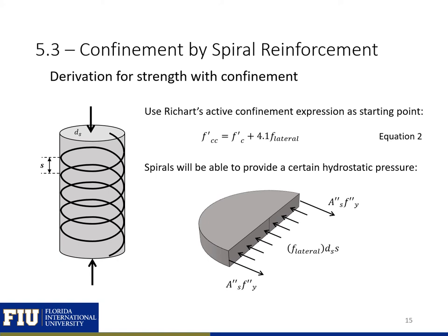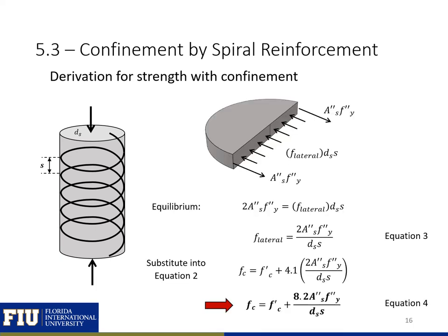We're going to look at a derivation for strength with confinement of a circular column with spiral reinforcement, using Richart's active confinement expression as a starting point. We take a slice from our circular reinforced concrete column and cut it in half. We can set our lateral force caused by the concrete wanting to expand equal to the restraining force provided by our spiral reinforcement using equilibrium, then solve for f-lateral and plug this into our expression from Richart et al. This gives us an expression relating confined concrete strength to unconfined concrete strength and the characteristics of our spiral reinforcement.